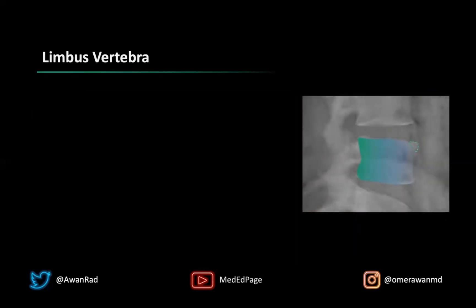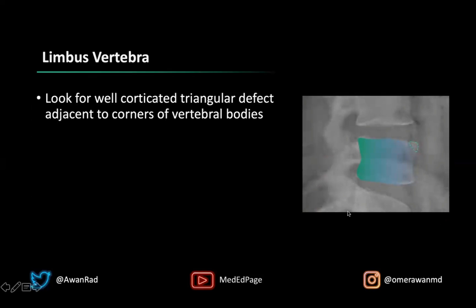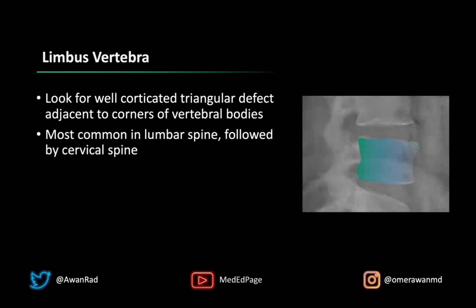The findings we typically see include a well-corticated triangular defect adjacent to the corners of the vertebral body, typically the anterior superior or anterior inferior aspect. This most commonly occurs in the lumbar spine, as in the index case, but it can also occur in the cervical spine as the second most common area. It is least likely to occur in the thoracic spine, but cases there do exist.